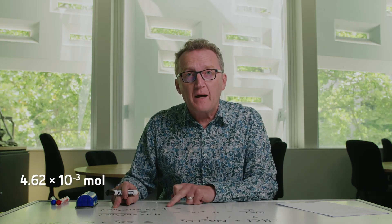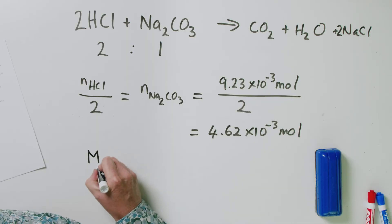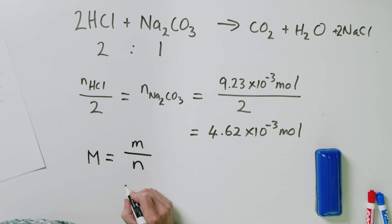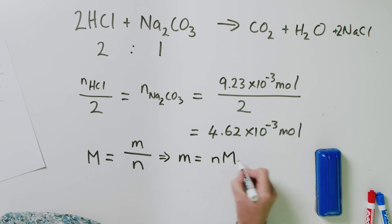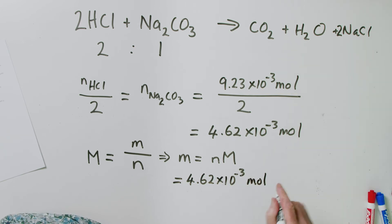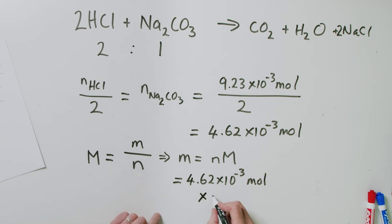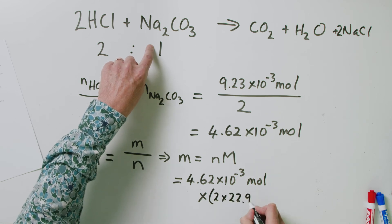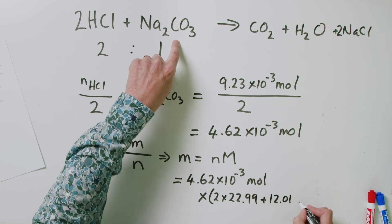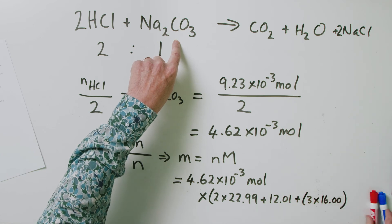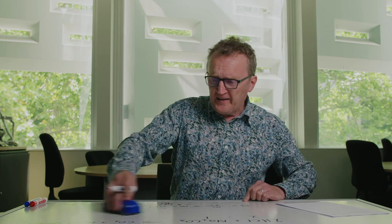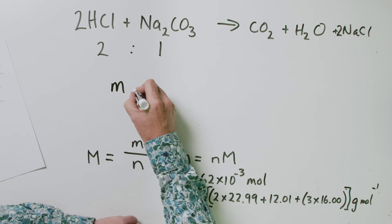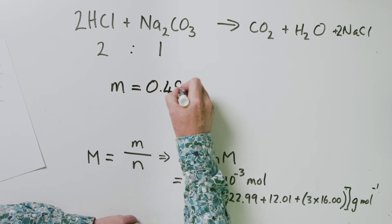Since we have moles and a chemical formula, we can get mass using m = n × M. Mass of Na₂CO₃ = 4.62 × 10⁻³ mol × (2 × 22.99 + 12.01 + 3 × 16) g/mol = 0.490 grams of sodium carbonate.